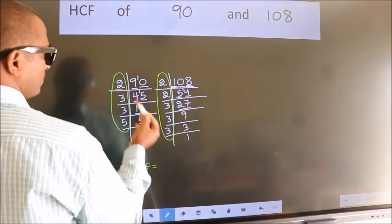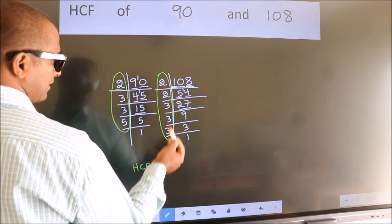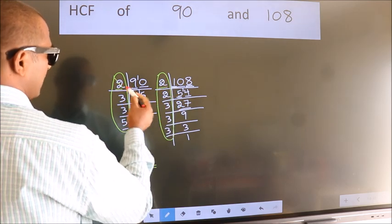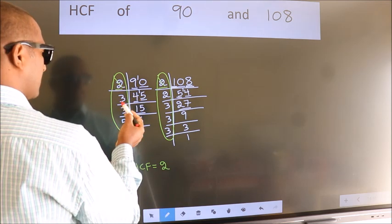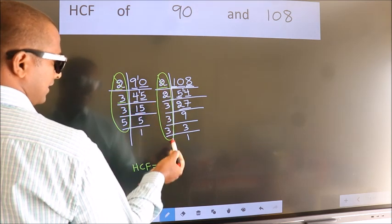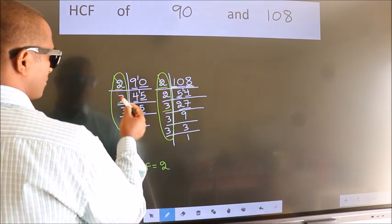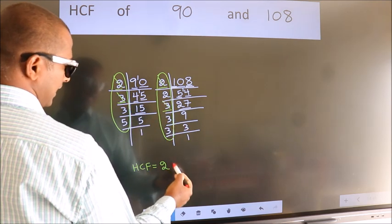Starting with the number 2. Do we have 2 here? Yes. So, cut 2 right here. Next number 3. Do we have 3 here? Yes. So, cut 3 right here.